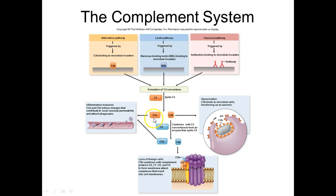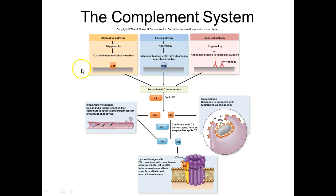C5A and C3A are really important for the inflammatory response. C3B — remember B for binding — is the one that opsonizes, tagging the pathogens for destruction by phagocytic cells. Then several other complement proteins come together to form the MAC complex, which can insert into membranes.